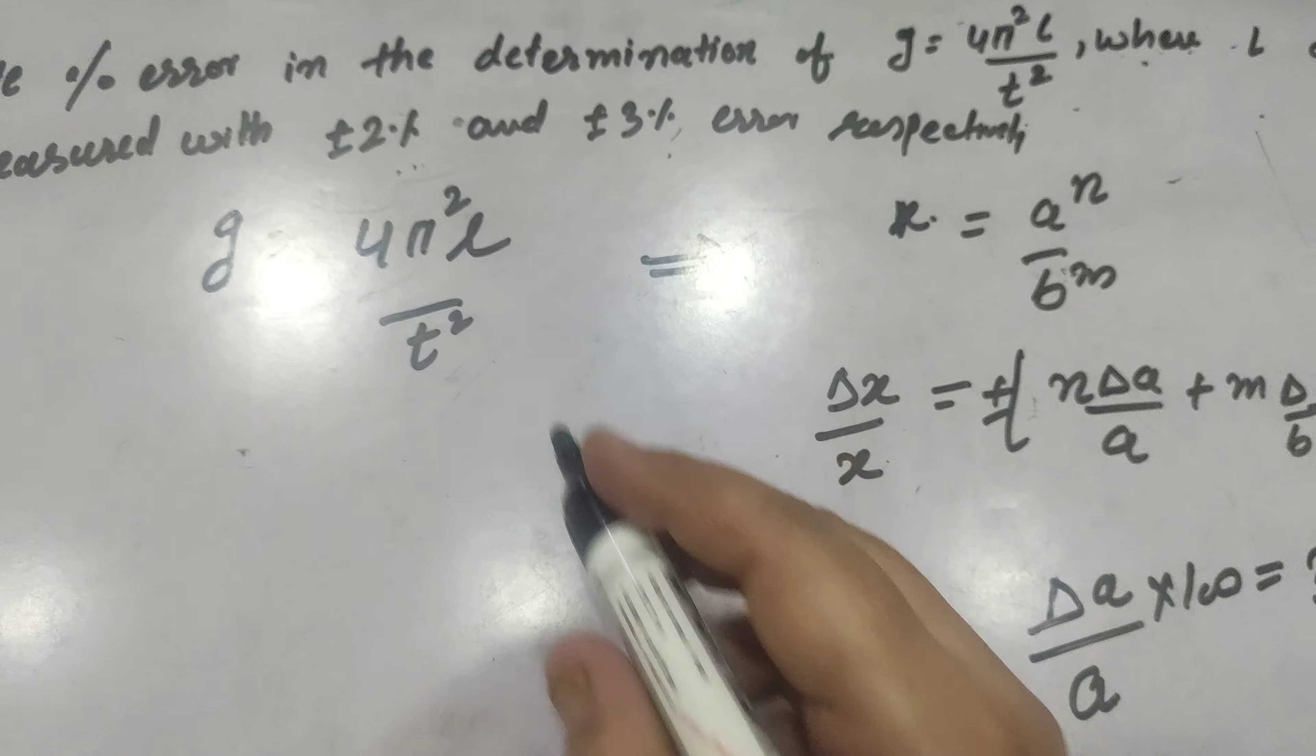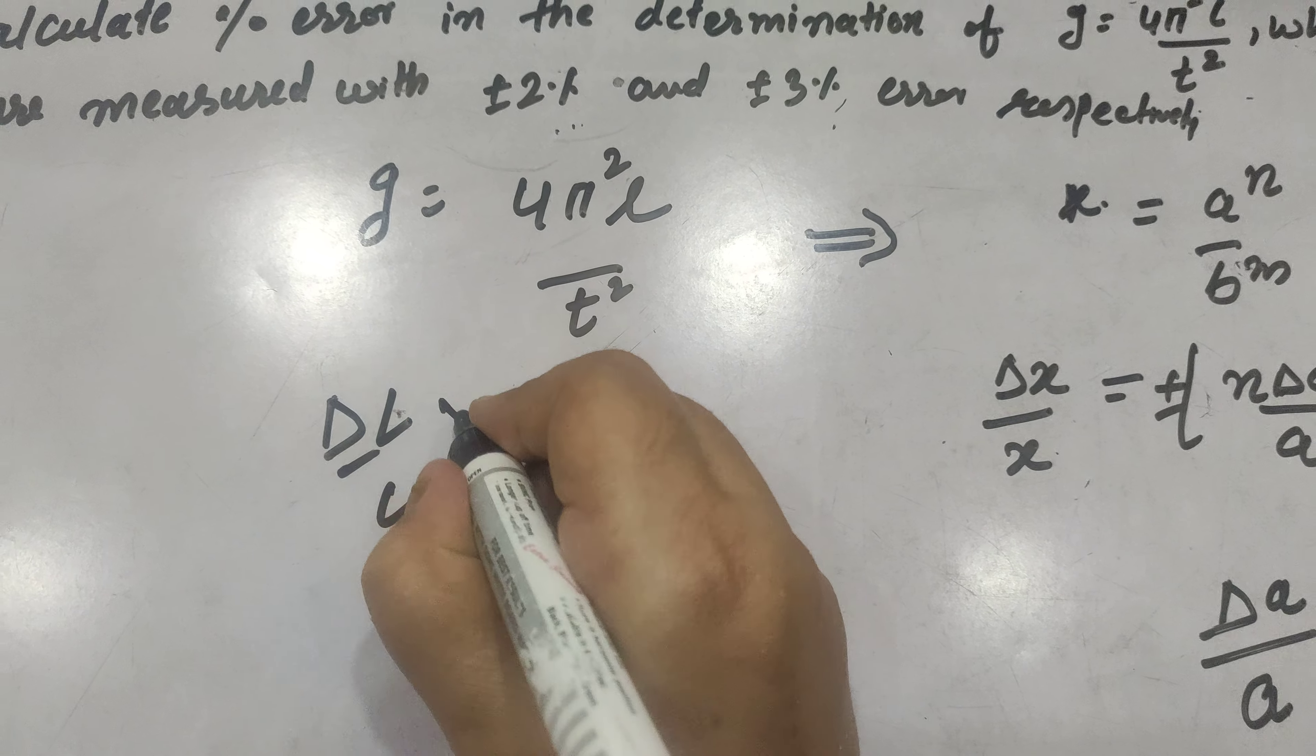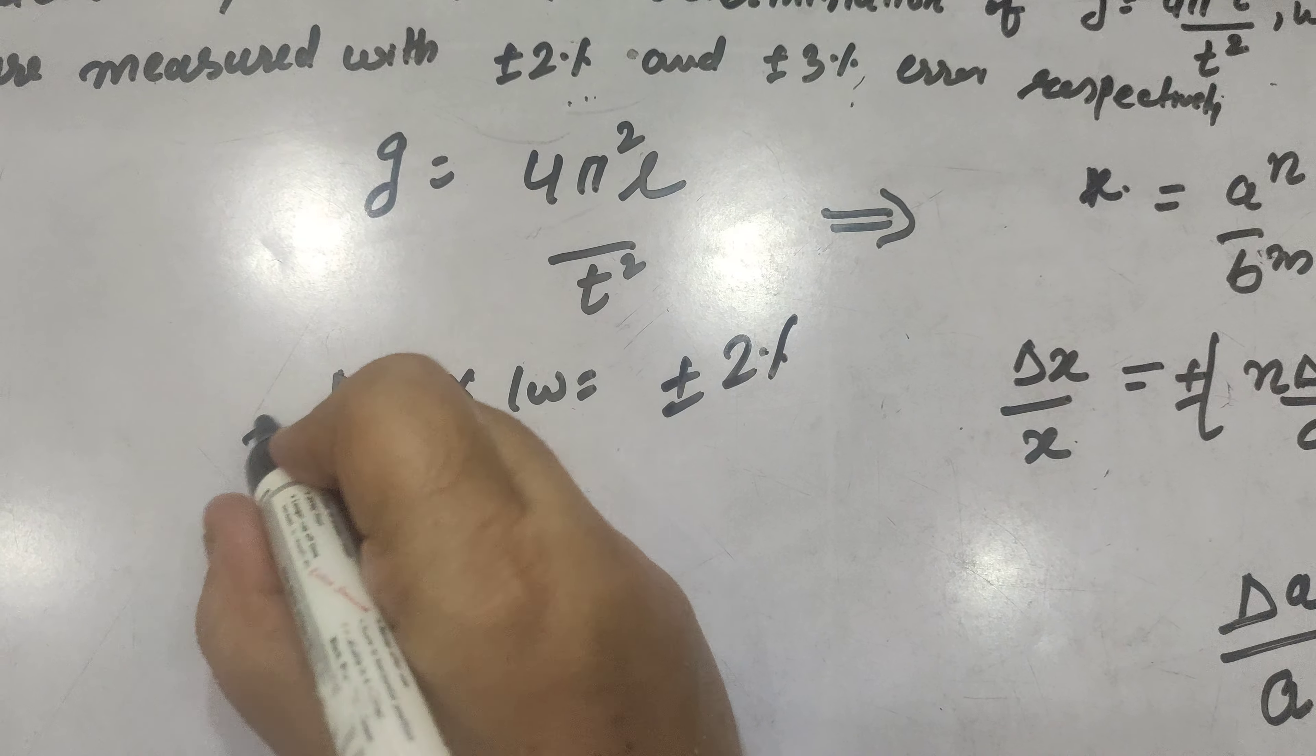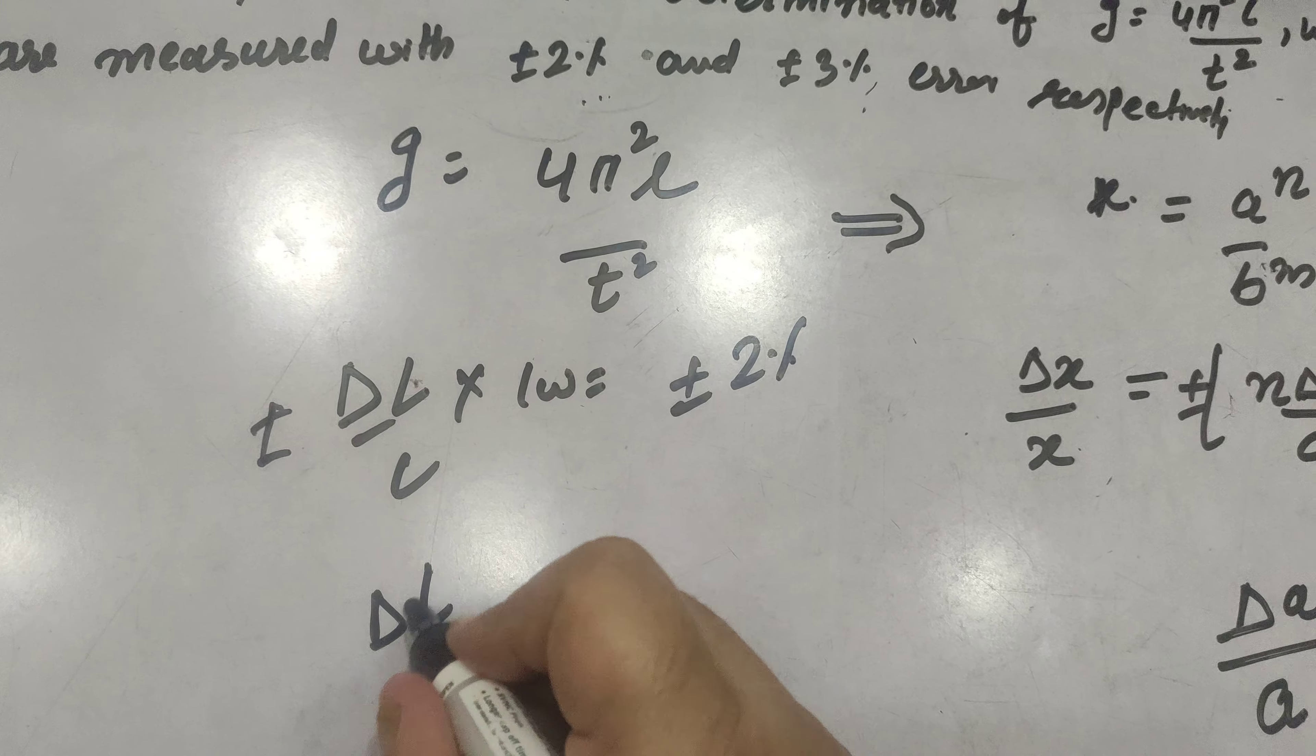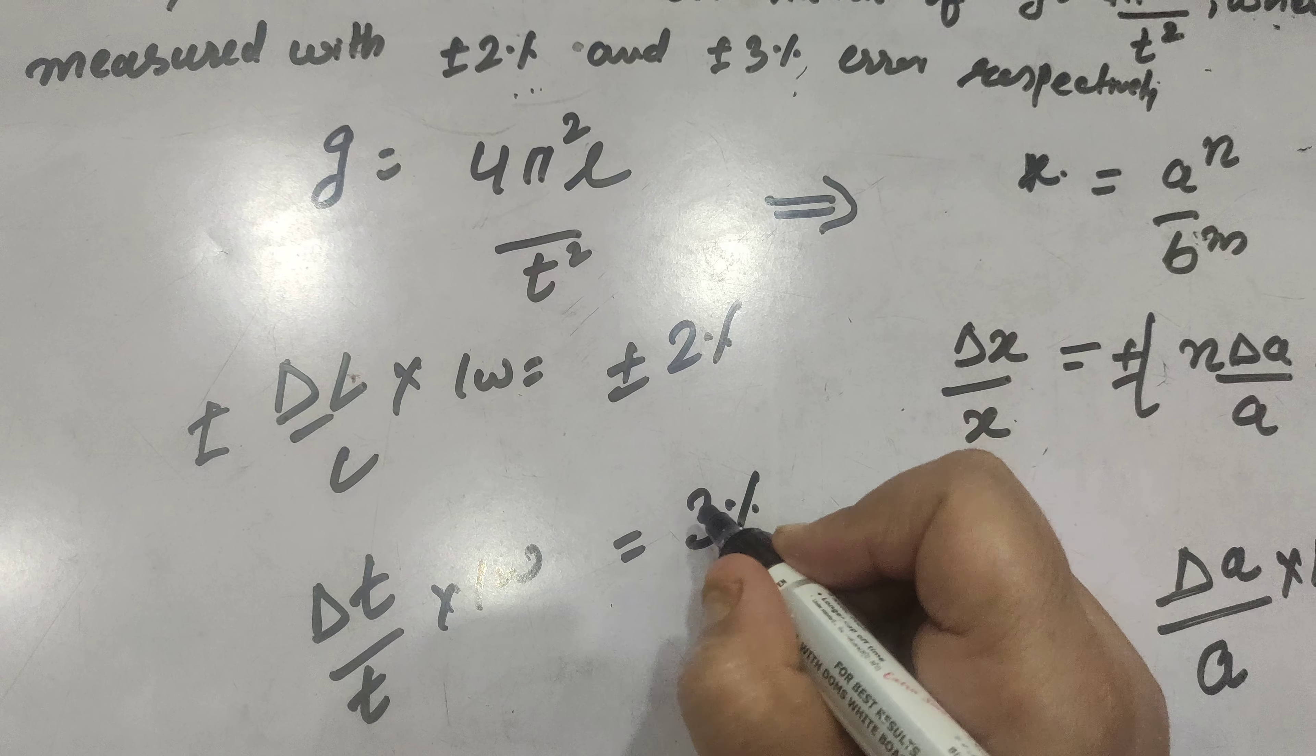Here it means delta L, delta L. What is given here? Delta L by L into 100 is given to be plus minus 2 percent and similarly delta T by T into 100 is equal to 3 percent is given to you.